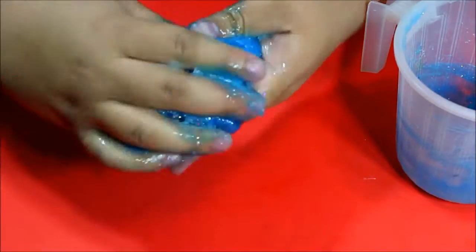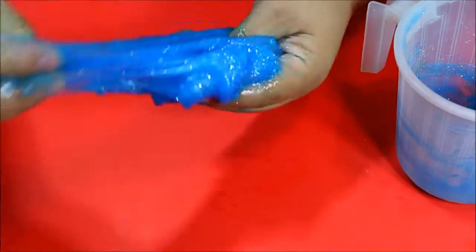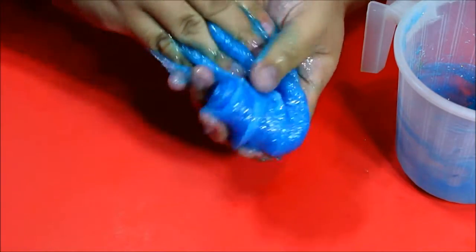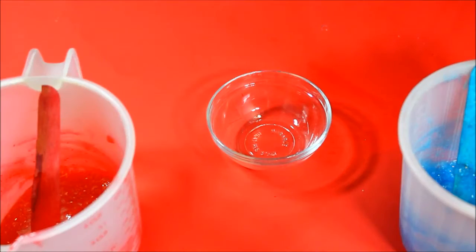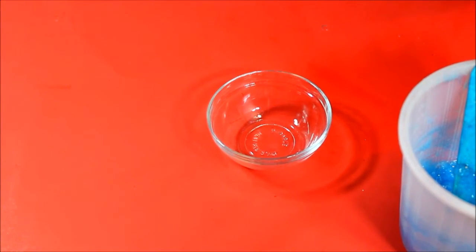Once you have the perfect consistency, go ahead and start kneading it until it stops sticking to your hands, and then do the same for the red. Next, I'm just going to go ahead and take both of our slimes and mix a little bit of it together so we can get a purple slime because I want three colors in my galaxy: blue, red, and purple.